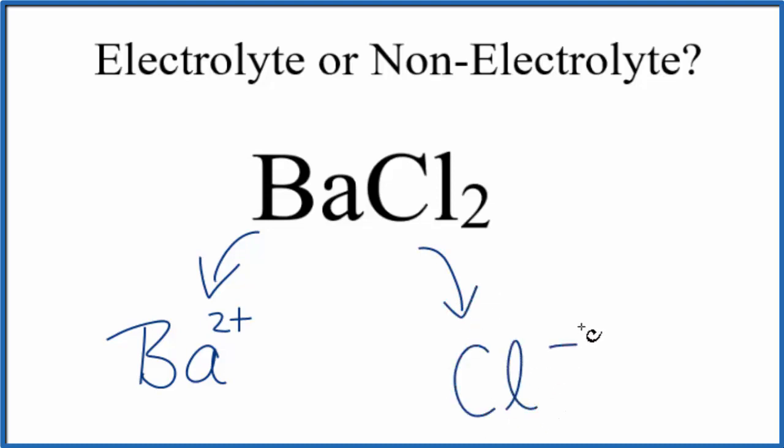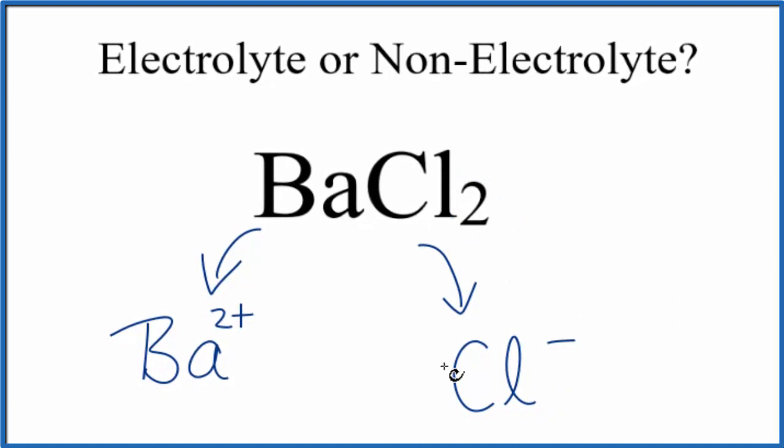Since we have 2 here as a subscript, that means we have 2 of these chloride ions, which makes sense. 2 times 1 minus is 2 minus. 2 minus and 2 plus balance out to give us this neutral compound.